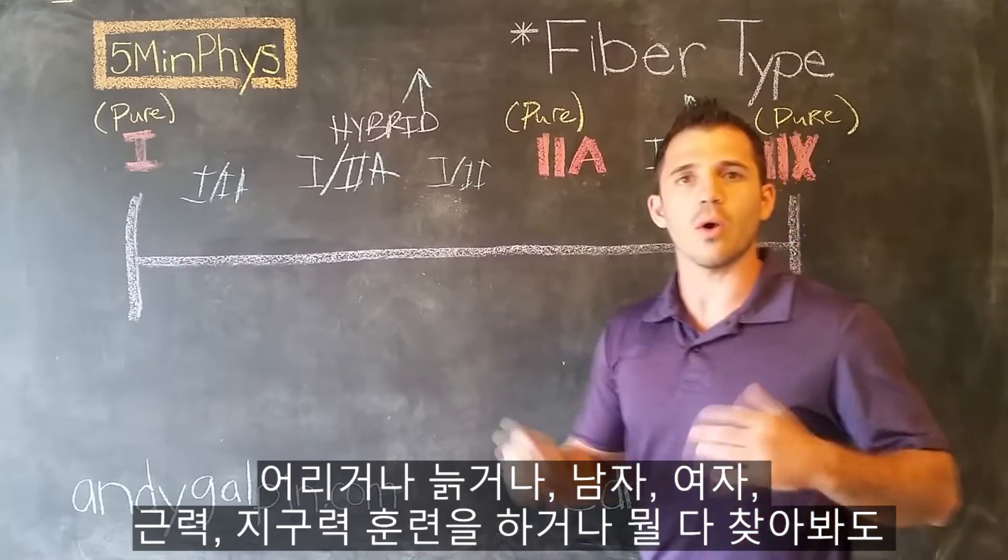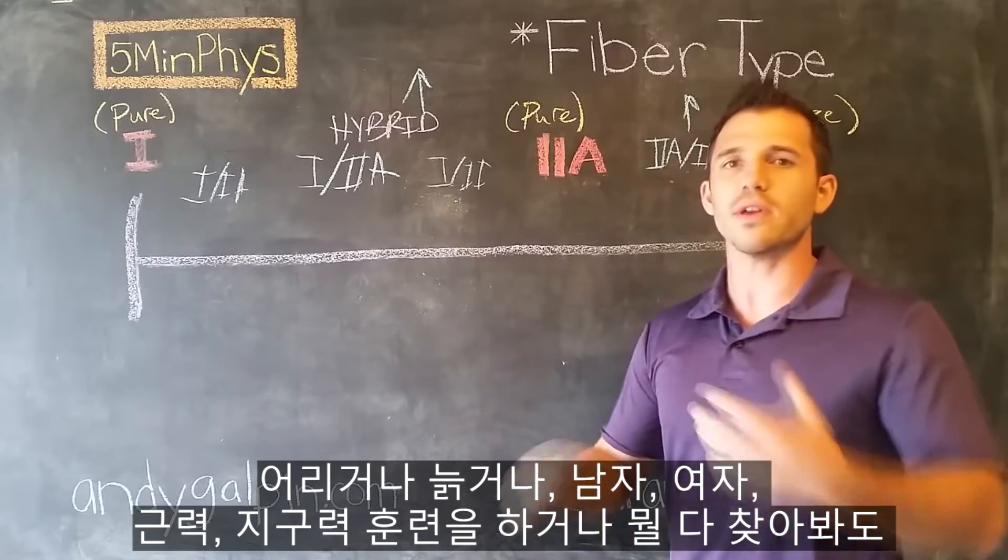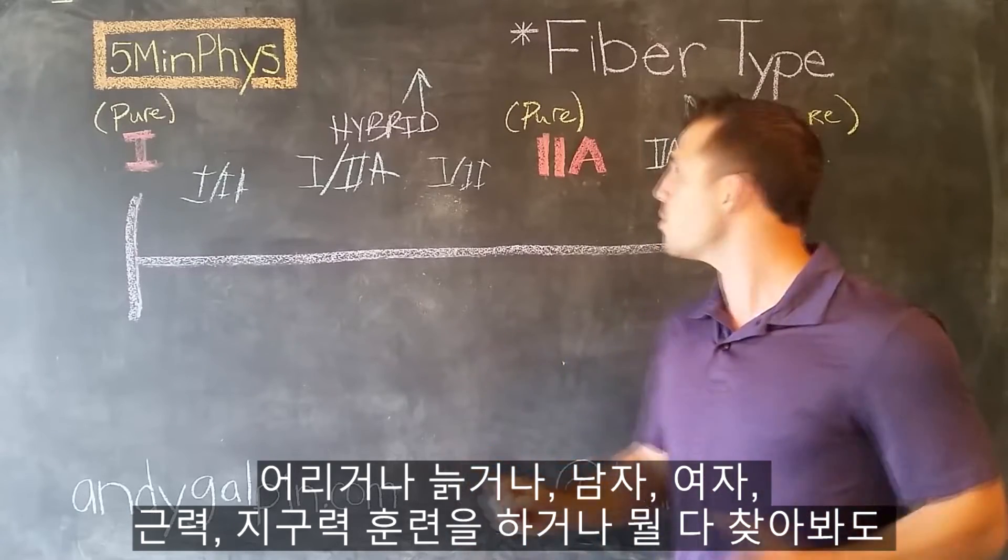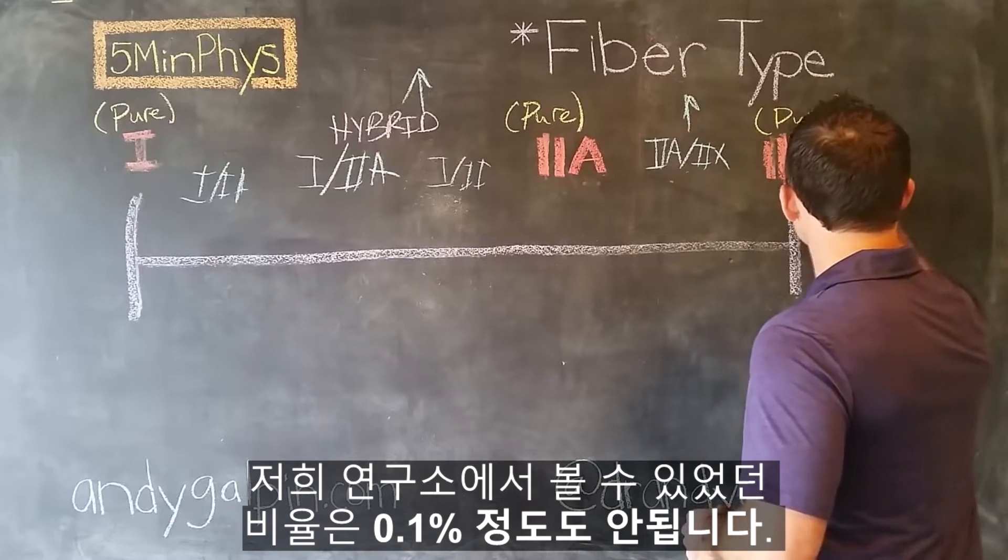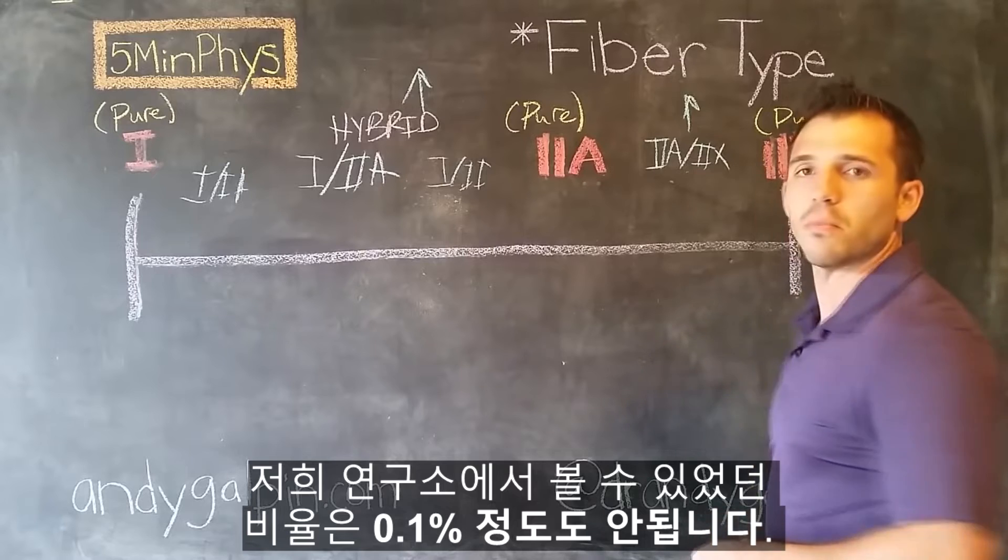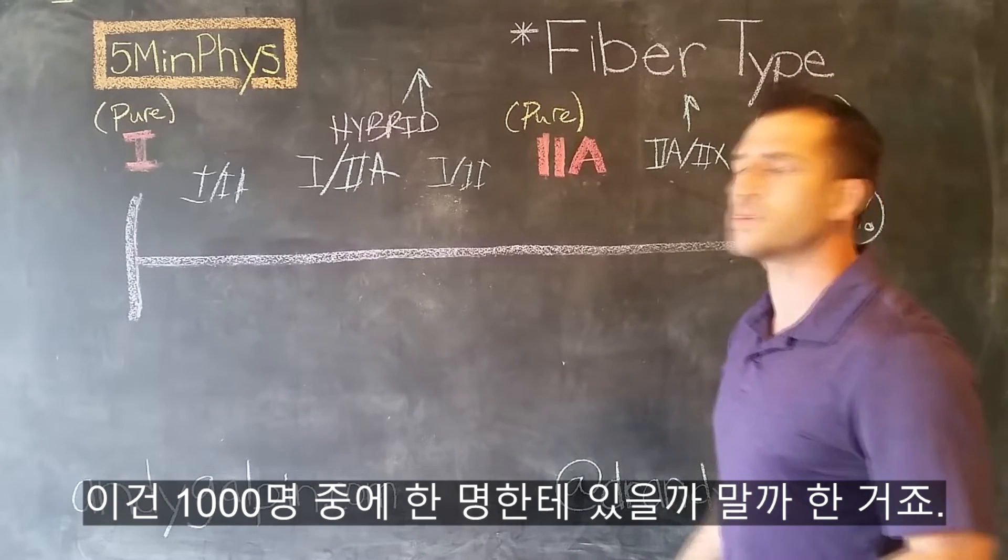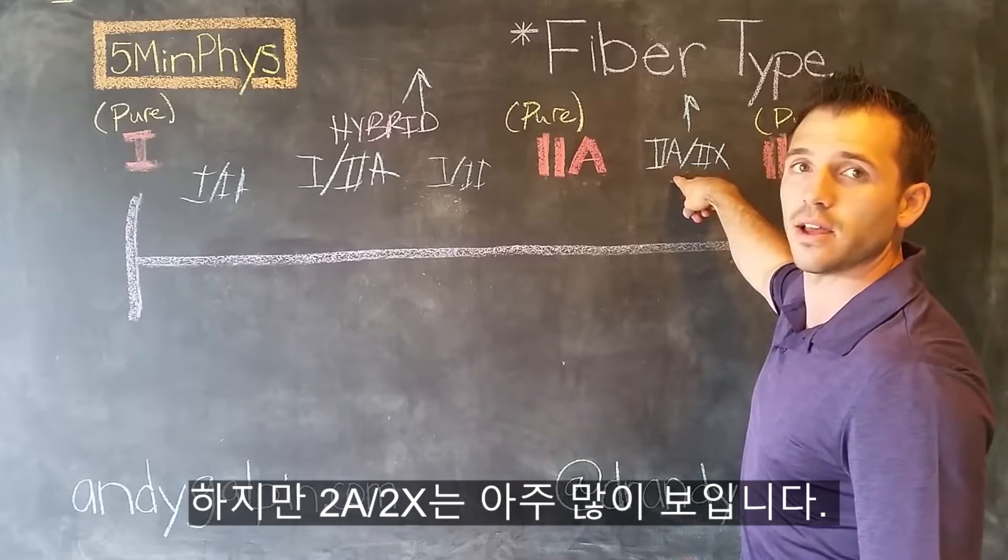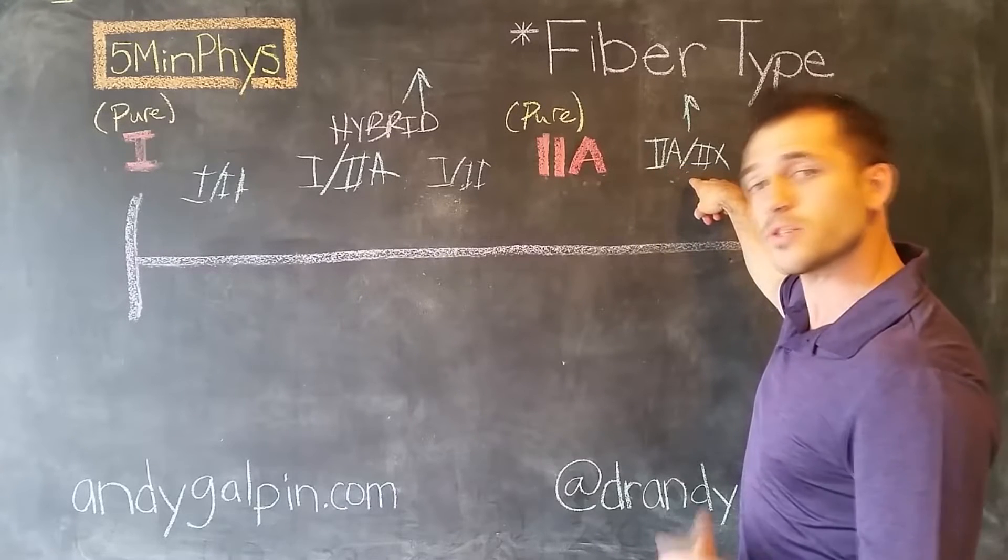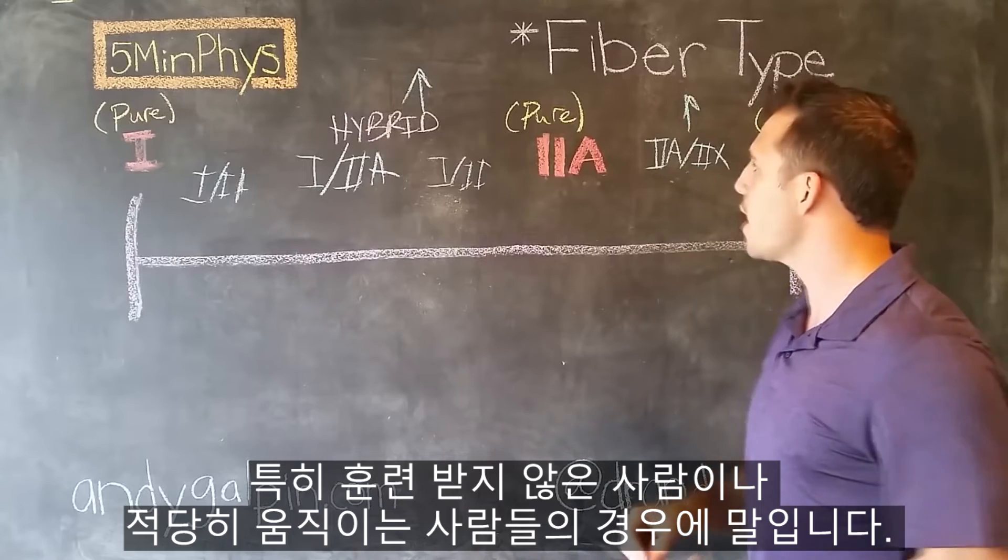Whether we're looking at young, old, men, women, strength trained, endurance trained, you name it, we don't ever see this. In fact, the percentage that we see in our lab is something like 0.1%. Maybe less. This is one in every 1,000 individual fibers is a pure 2X. But we see a ton of 2A 2Xs, especially if you're untrained or even moderately active.